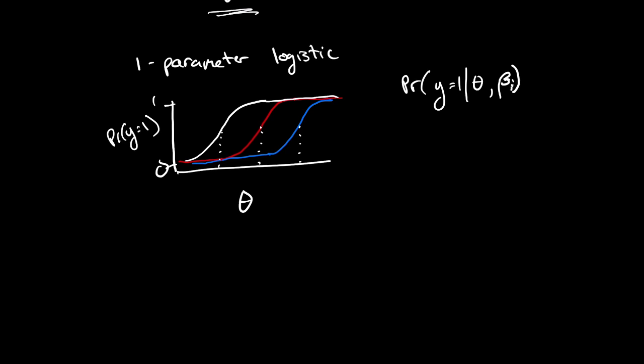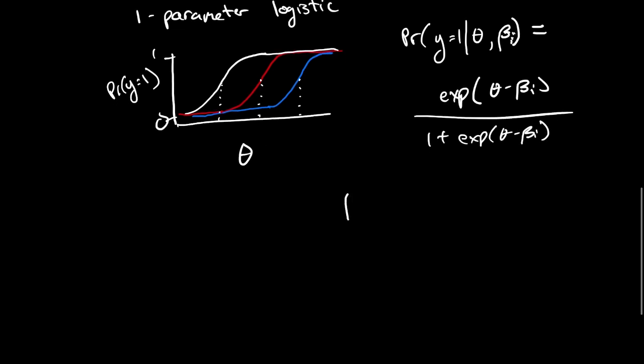Beta is our item varying parameter. It is what tells the difference between each item. That is the exponential function of theta minus beta i over one plus the exponential of theta minus beta i. Beta i is item difficulty.